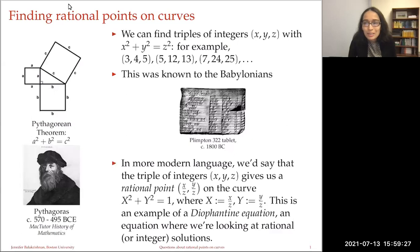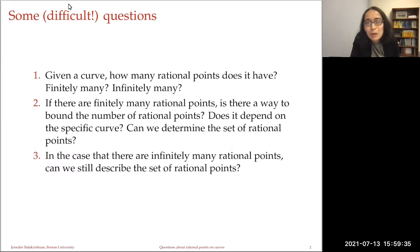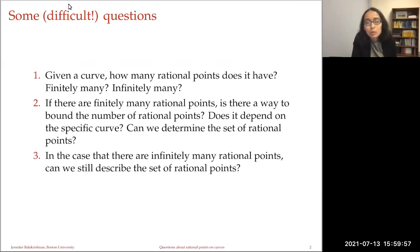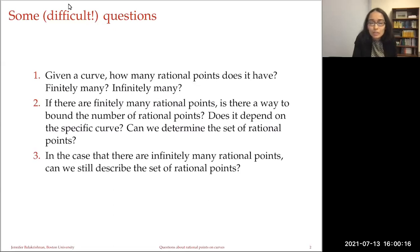I thought we would look at a few different examples that have been studied throughout the years. In doing that, we'd also like to pose some questions which might sound rather simple and innocent, but turn out to be quite difficult — just to give you a flavor. If I have a curve, how many rational points does it have? Does it have finitely many, or infinitely many? If there are finitely many, is there a way to bound the number? Can we determine the set of rational points? In the case of infinitely many rational points, can we still describe or parametrize the set in some way?